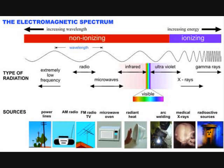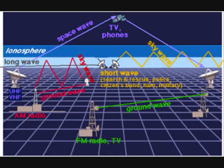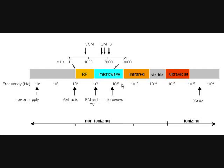We begin at the low end of the non-ionizing part of the electromagnetic spectrum: radio waves. Radio waves can send signals and create a small electric current, but they don't do much else.